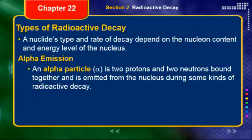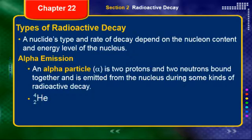The first type of radioactive decay is alpha emission. An alpha particle — the same particle from Rutherford's gold foil experiment — consists of two protons and two neutrons bound together, which is a helium nucleus. It is emitted from the nucleus during some kinds of radioactive decay, represented as either the Greek alpha symbol or the symbol notation for helium-4. This is not a true helium-4 atom since it has no electrons; it is a positively charged particle. Alpha particle emission is restricted almost entirely to heavy nuclei — typically those with 70 or more protons.